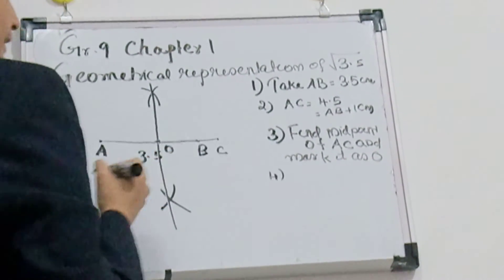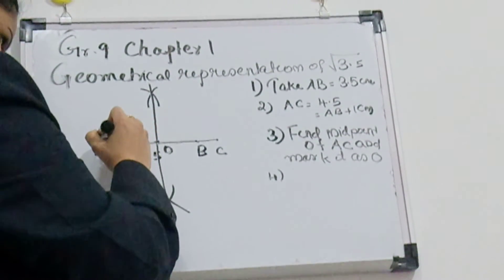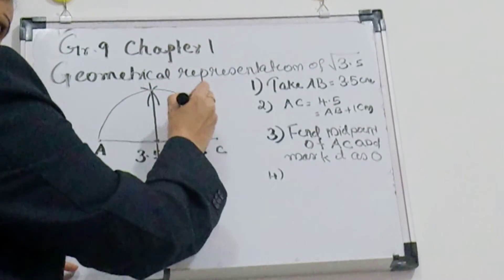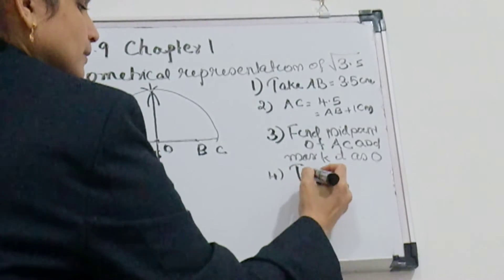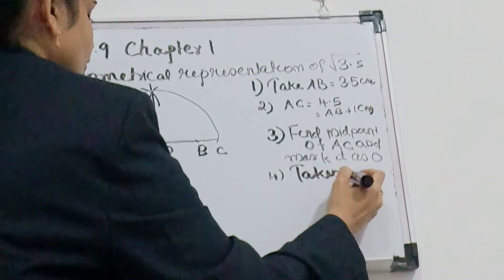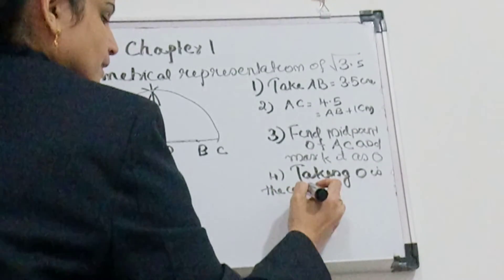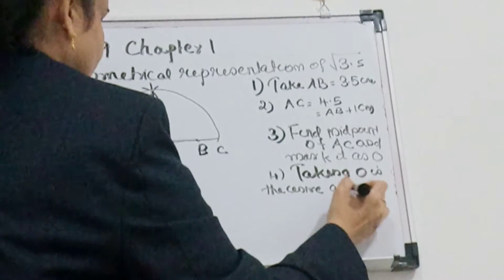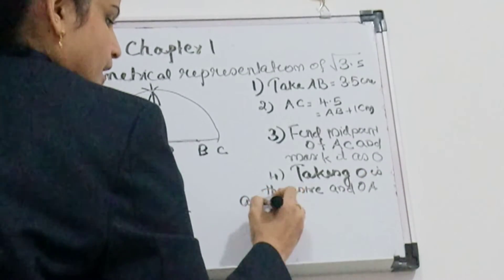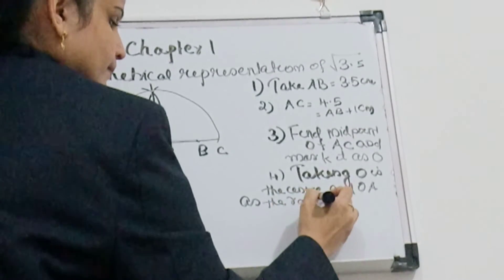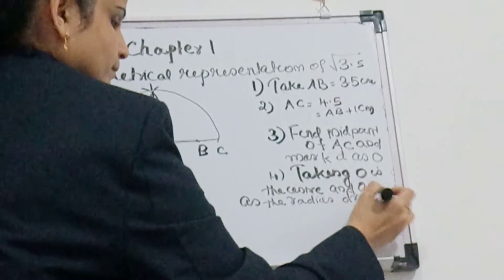Now next step is keeping the compass here and draw a semicircle here. So taking O as the center and OA or OC as the radius, draw a semicircle.